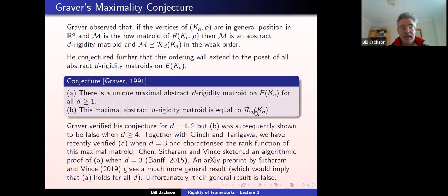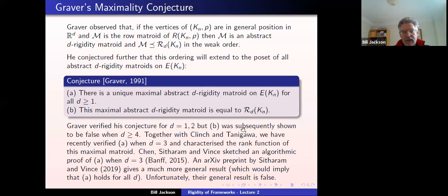There is a historical note. Graver verified both parts of his conjecture for d equals one and two. Not long after, a student pointed out that part B of the conjecture was false when d was greater than or equal to four. The main thing I want to tell you about in my remaining two lectures is recent work with Kirtley Clinch and Shinichi Tanigawa. What we've done is verify that part A of the conjecture is true when d equals three — showing there is a unique maximal abstract three-rigidity matroid — and we characterize the rank function of this matroid.